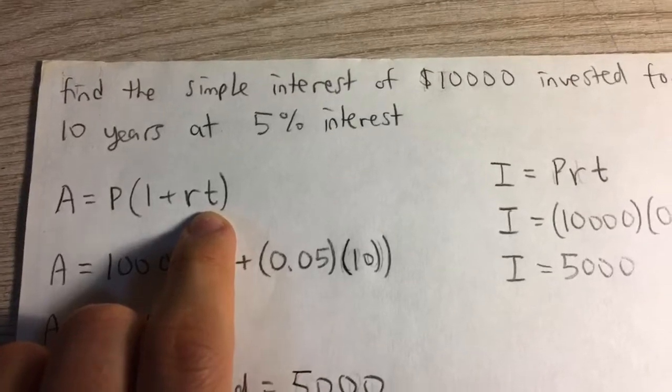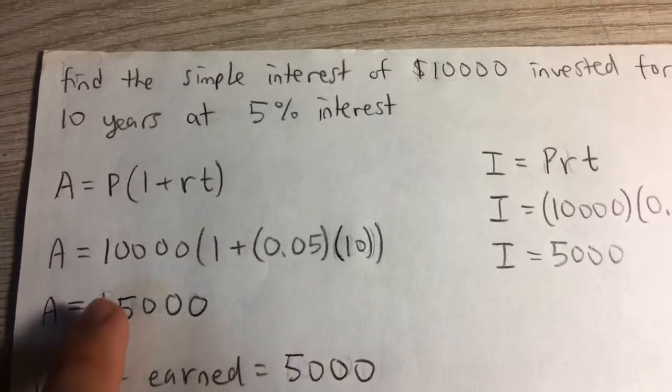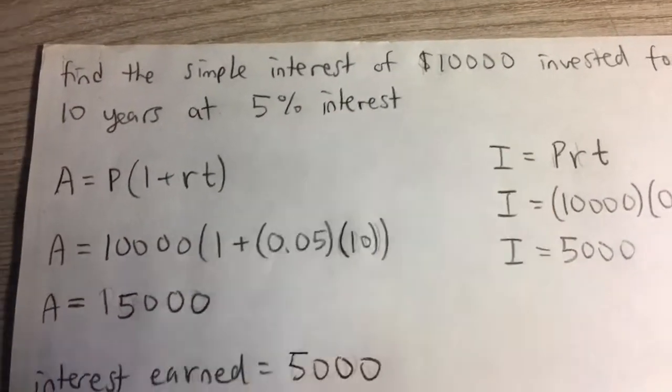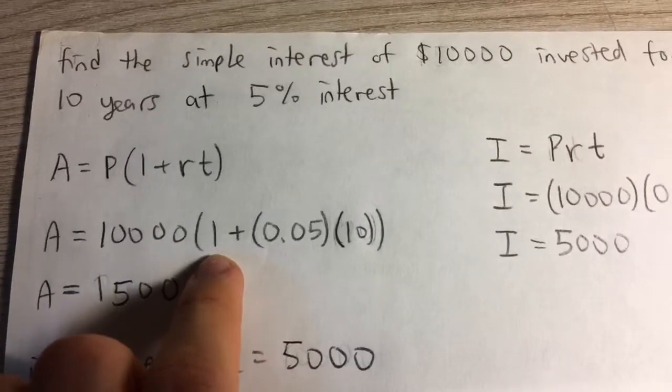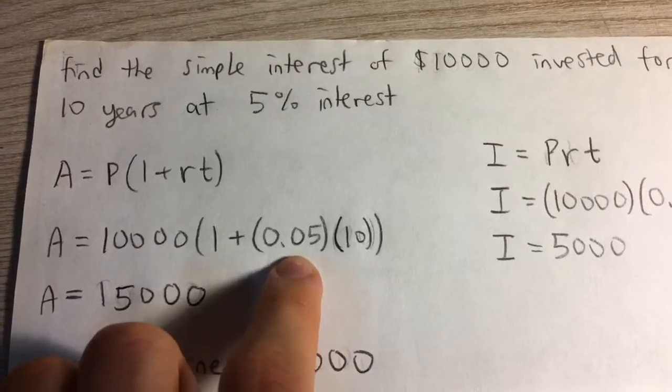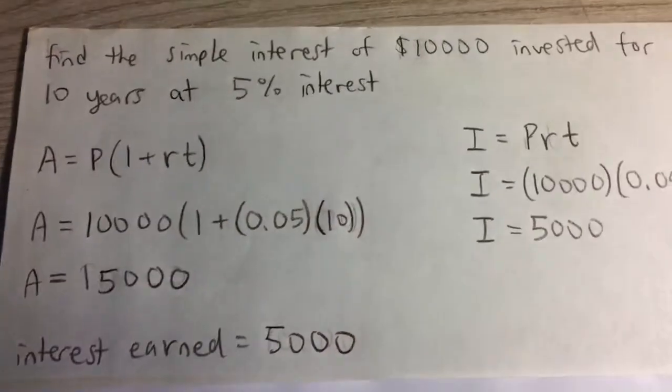So here our principal is $10,000 we invested. We have one plus 0.05 because we have to convert 5% into a decimal.